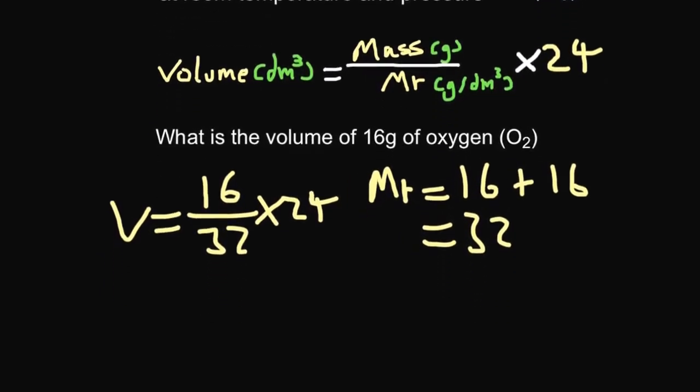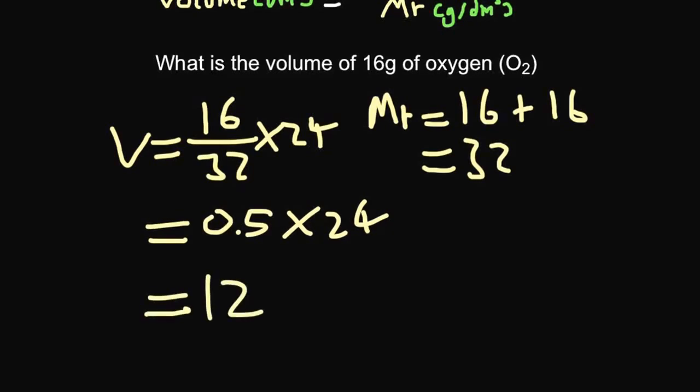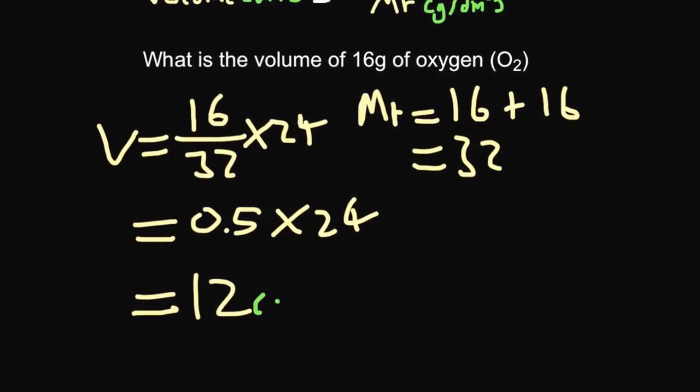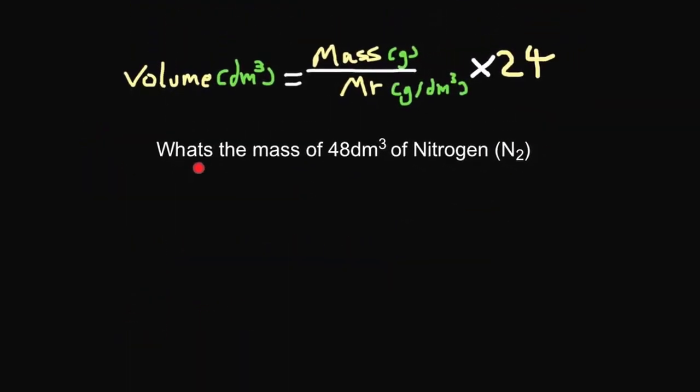So that works out as you've got 0.5 times 24, because 16 divided by 32 is 0.5, so that comes out at 12. The units, as seen up here, are dm cubed, so that is 12 dm cubed. So again, pause the video and try this question.